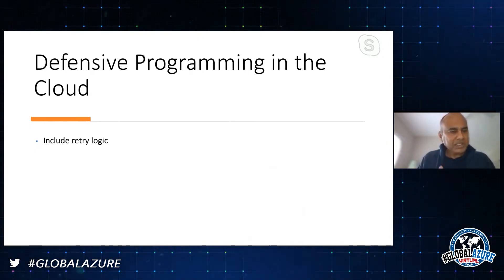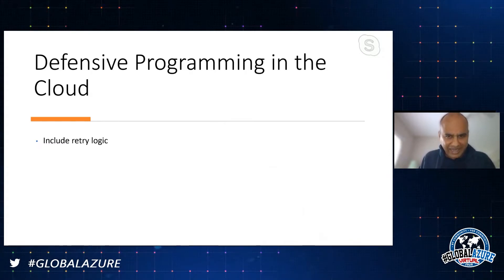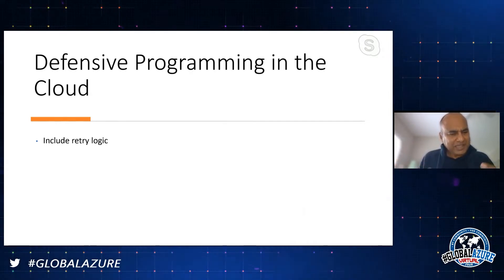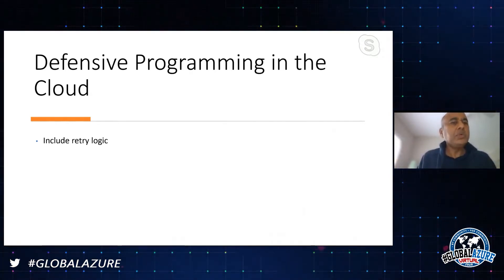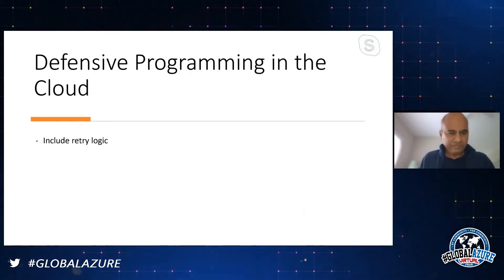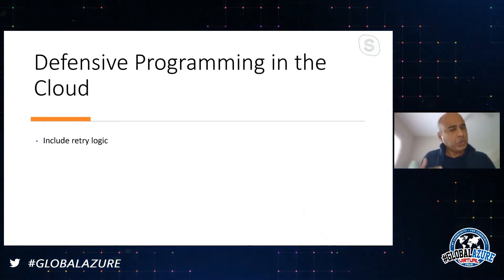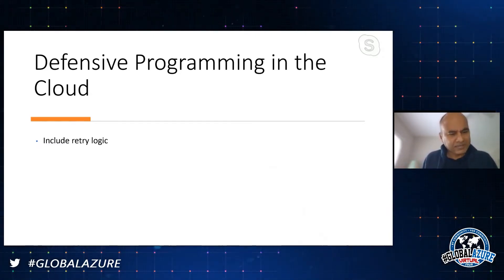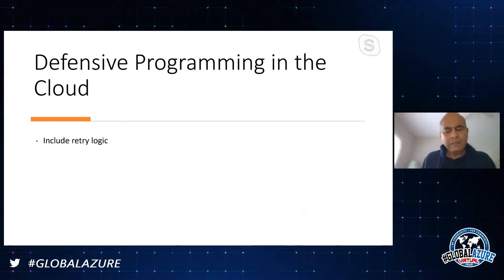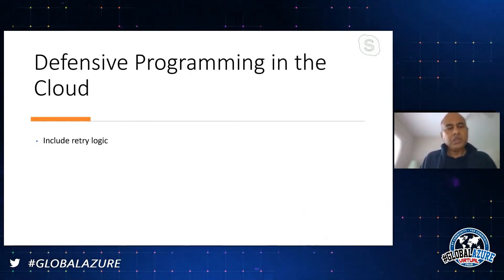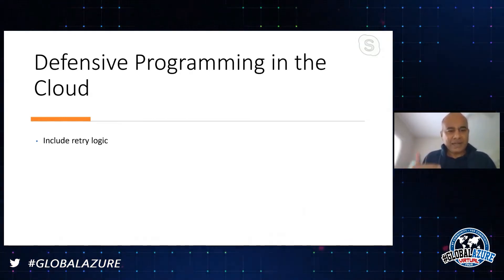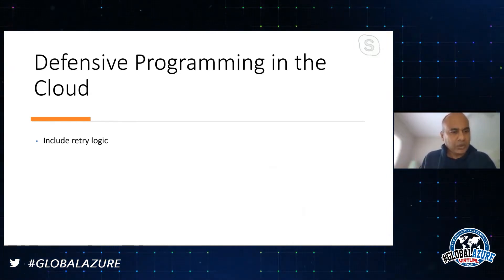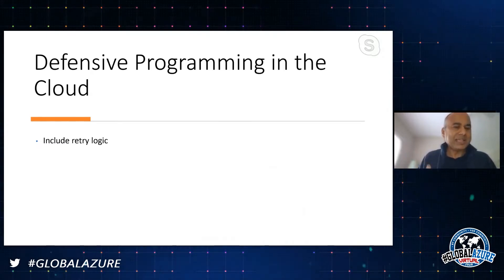I would argue that the chances of a transient fault are higher in the cloud. Unlike on-premises where you had dedicated capacity, in the cloud you're in a multi-tenant environment so you can be throttled. You're also dependent on multiple services - storage, app service, and so on - so you have a chance that a transient failure may occur.